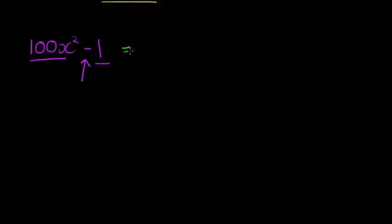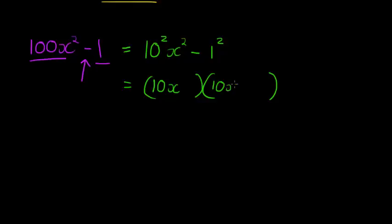So, a hundred, for example, can be written as ten squared. x squared minus one times one is one, so one can be written as one squared. And that would give me two brackets, where the one has a ten x, taking away the squares, and multiplying that with another ten x, that's where the hundred x squared come from.